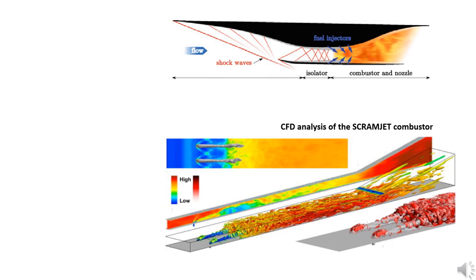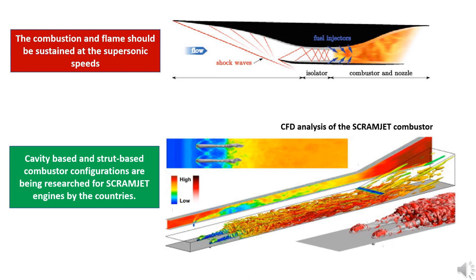In scramjet engine, establishing and sustaining combustion is the most critical issue. Though the speed of air has been reduced to supersonic speeds, it is still very fast and it gives very small time for the fuel and air to mix and perform combustion.